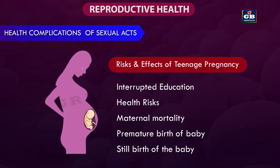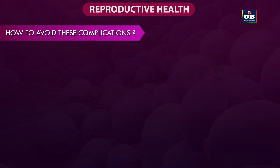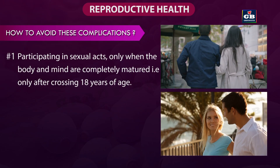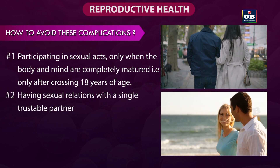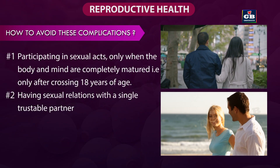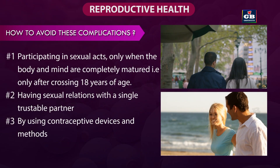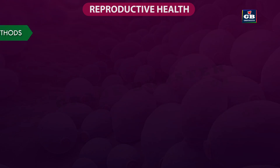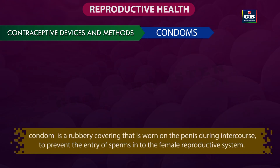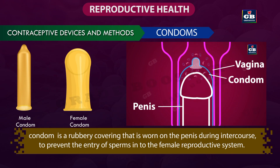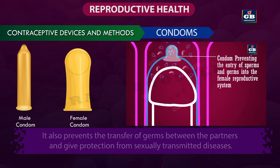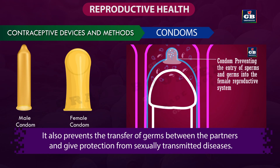For girls, getting pregnant at a younger age can adversely affect their health. How to avoid these complications? 1. Participating in sexual acts only when the body and mind are completely matured — that is, only after crossing 18 years of age. 2. Having sexual relations with a single trustable partner. 3. By using contraceptive devices and methods. Condom is a rubbery covering worn on the penis during intercourse to prevent the entry of sperms into the female reproductive system. It also prevents the transfer of germs between partners and gives protection from sexually transmitted diseases.